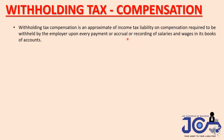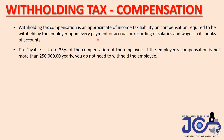The third compliance is withholding tax on compensation. This is an approximate of income tax liability on compensation, required to be withheld by the employer upon every payment or accrual of salaries and wages recorded in the books of accounts. You will have withholding tax on compensation if you have an employer-employee relationship. The tax payable is up to 35% of the employee's compensation. However, if the employee earns less than 250,000 per year, you are not required to withhold.